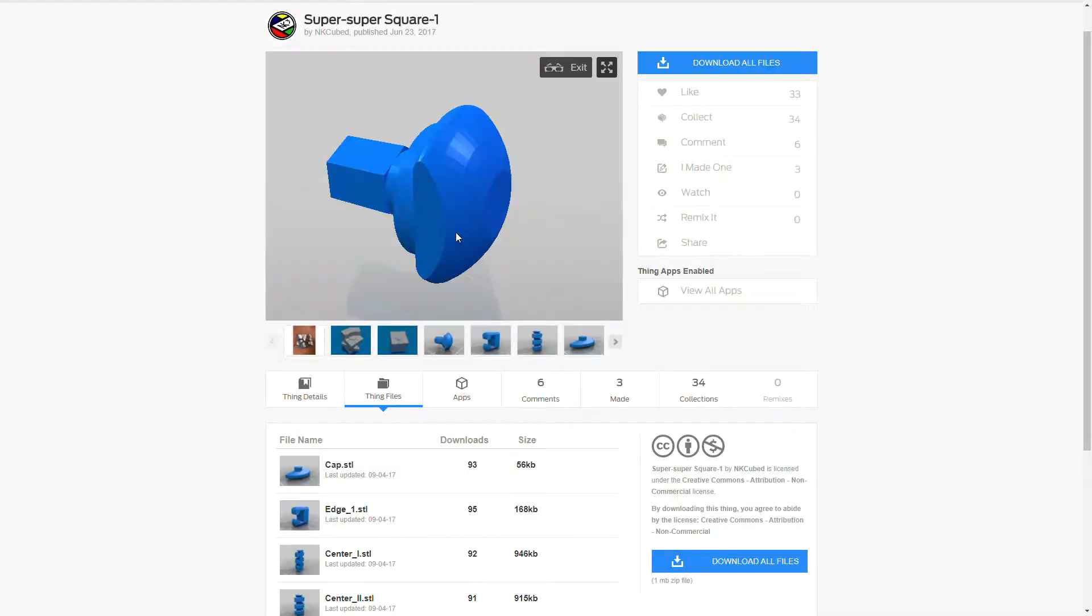So you need to print one of these pins. NK Cubed recommends printing it on its side because he says that otherwise it's too brittle. I personally have printed it twice bottom down and haven't experienced it being brittle, but take it as you will.